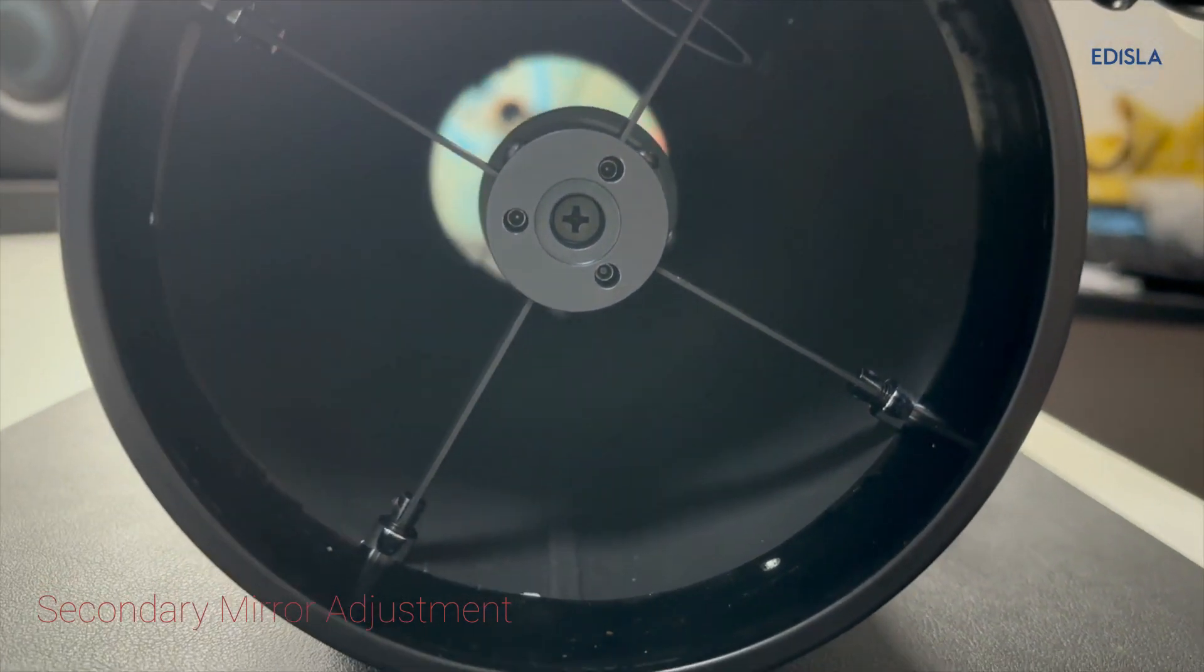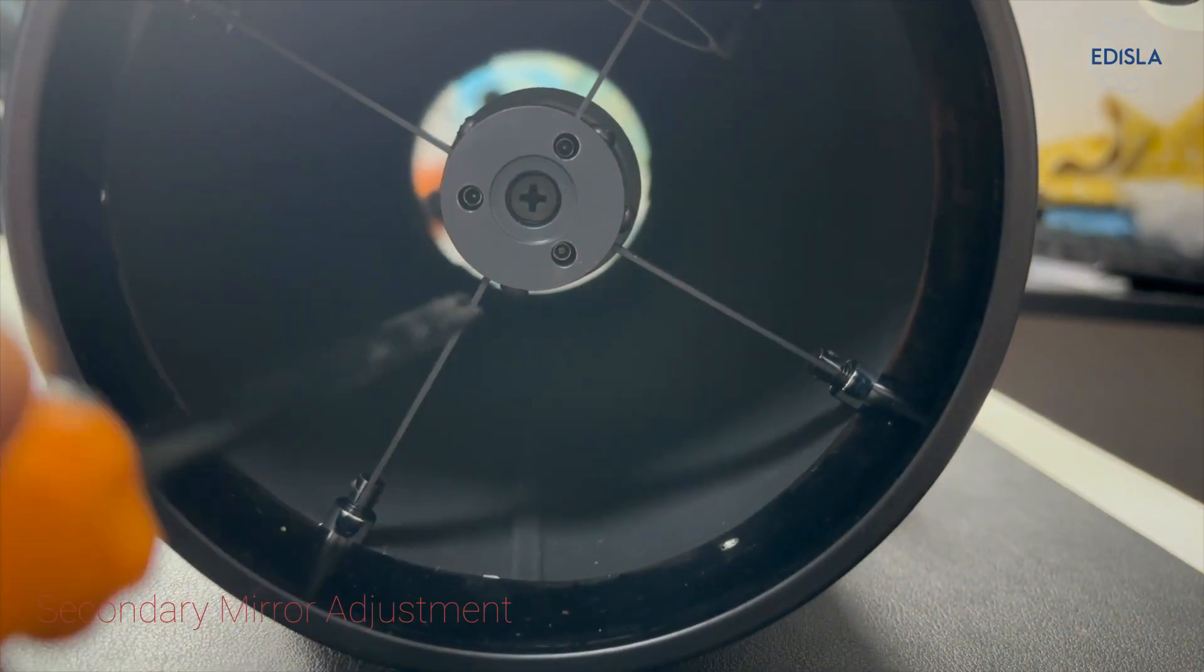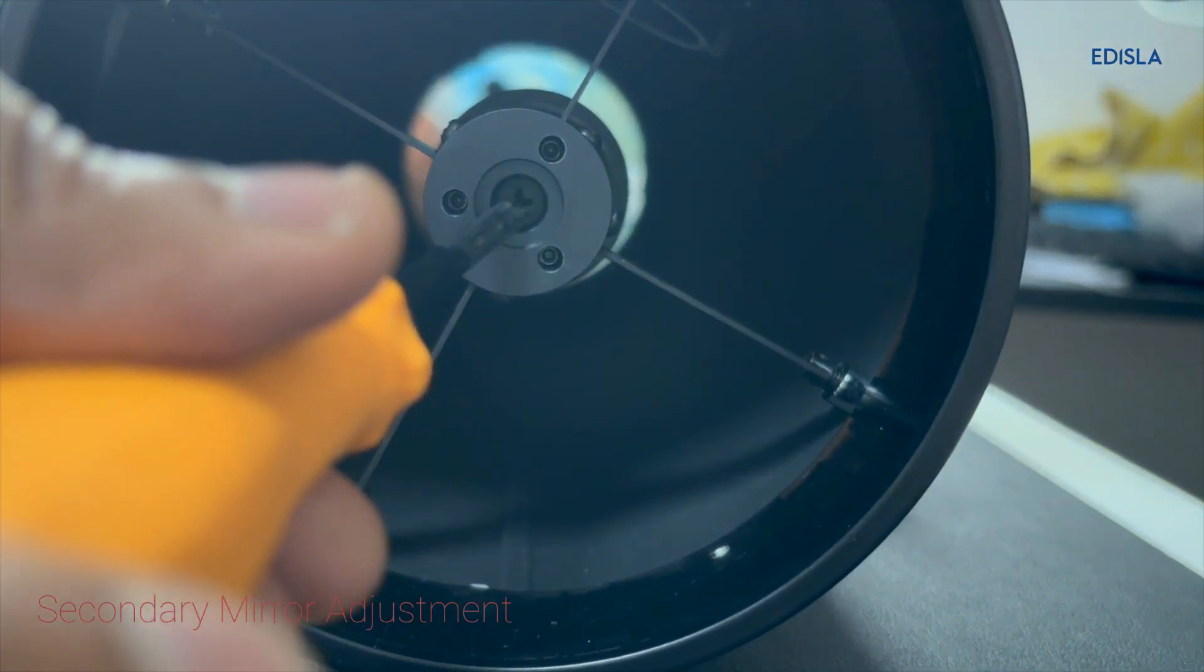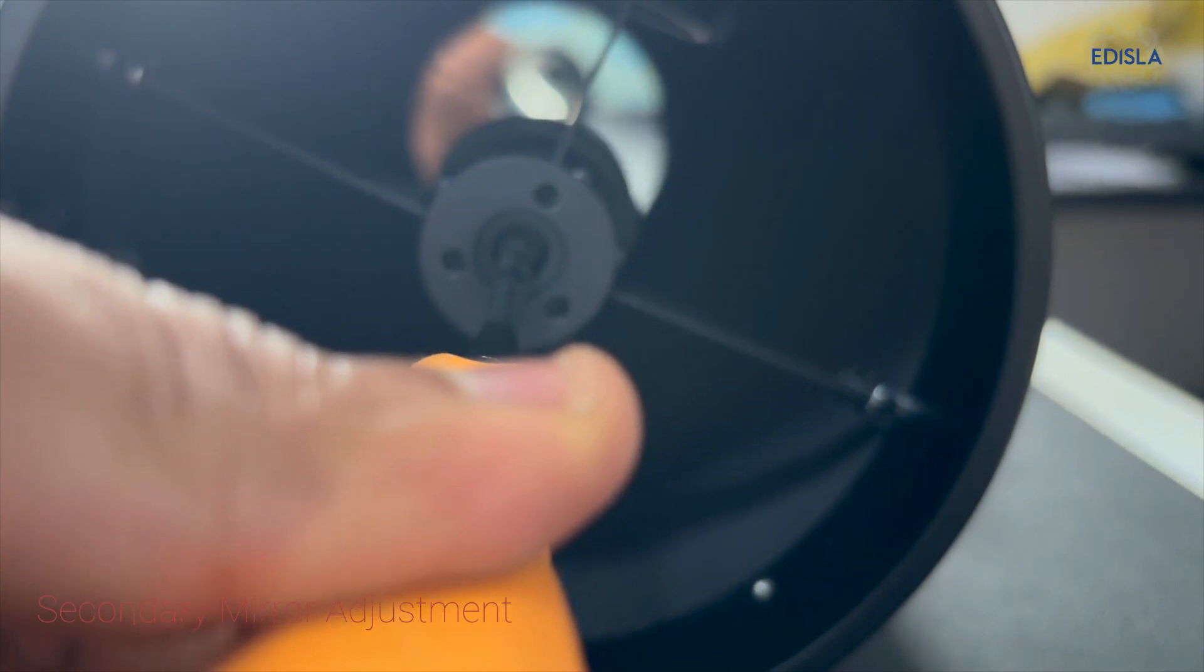Use a screwdriver to gently turn the center screw counterclockwise by about one degree to loosen the secondary mirror. Be careful not to unscrew it completely, as this could cause the mirror to fall and void your warranty. A slight tweak is all that's needed.